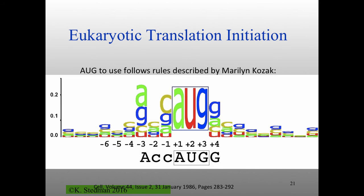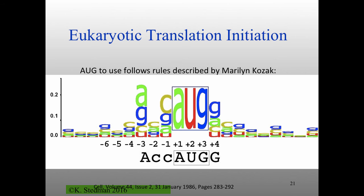People have looked a lot at eukaryotic translation initiation. This consensus sequence shows that 100% of the time you have AUG at position +1, and there are also other nucleotides around this starting site that are important for association. But one thing you notice is this is not a Shine-Dalgarno sequence — there's no conserved sequence upstream. It's a very different kind of structure on your messenger RNA. People thought Shine-Dalgarno was happening in eukaryotes and then looked and couldn't find it. Shine-Dalgarno sequences are found only in bacteria.